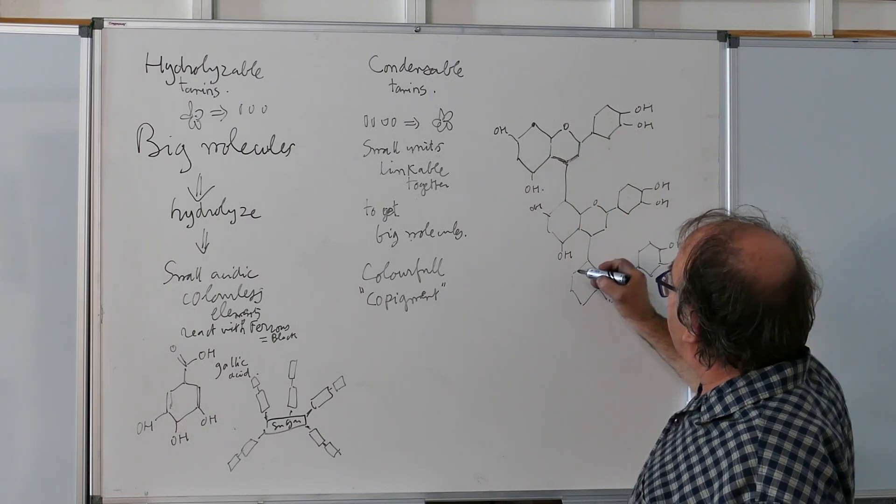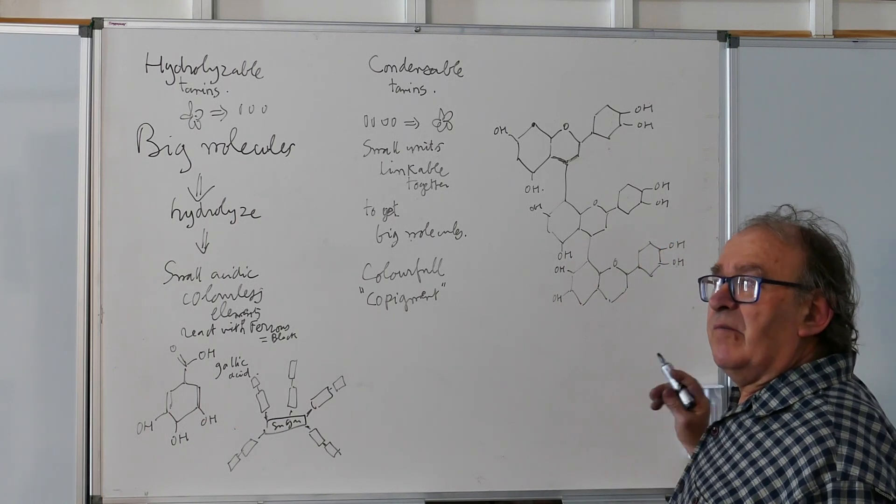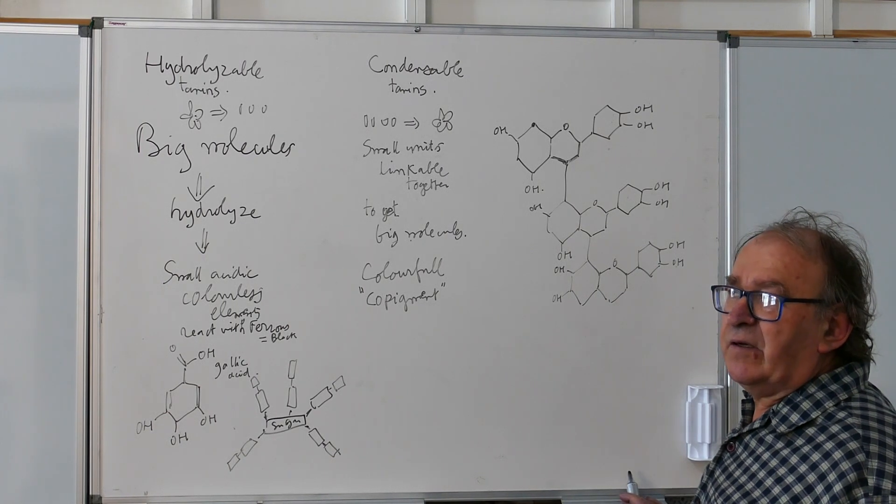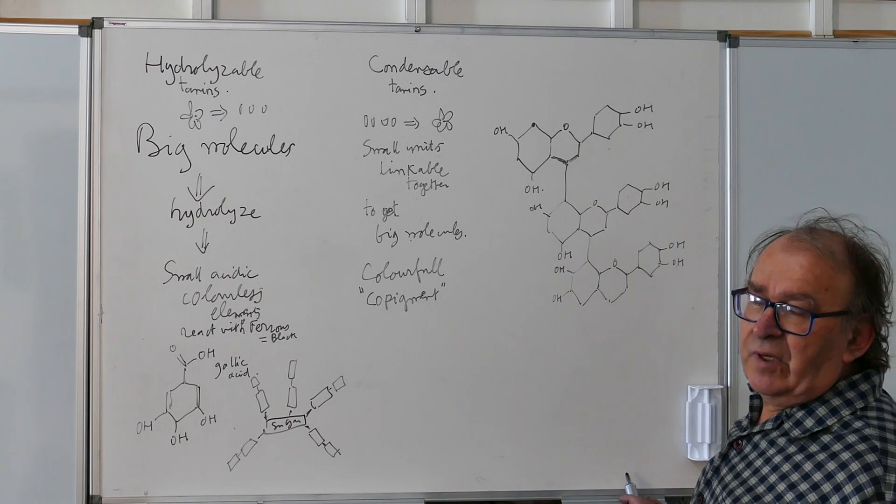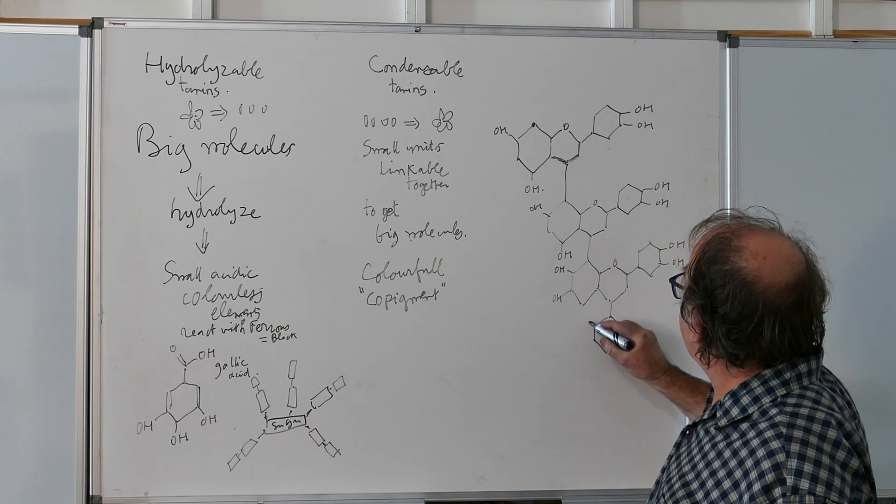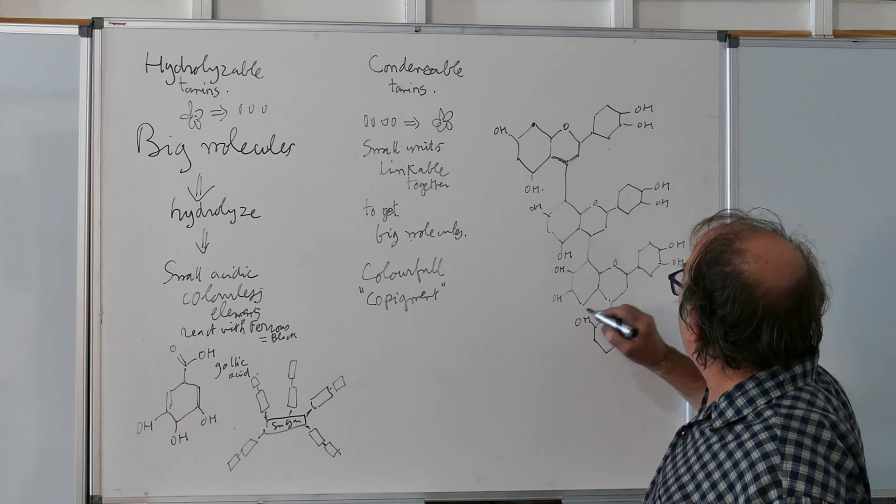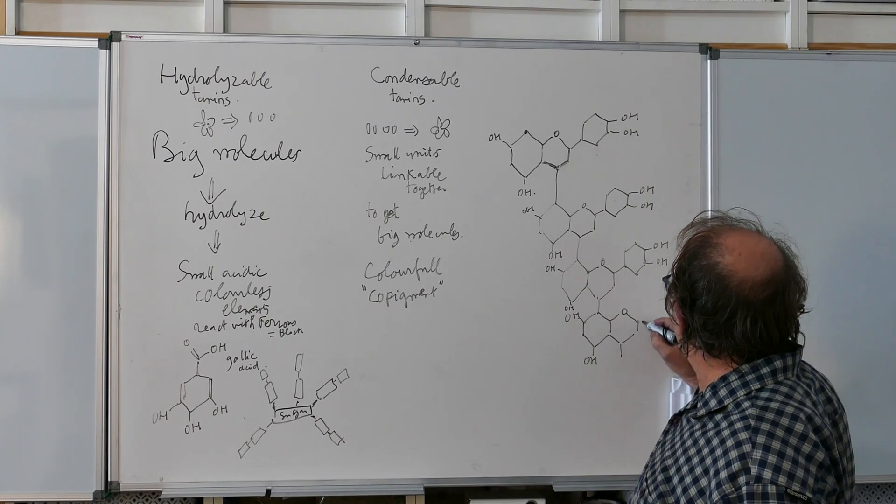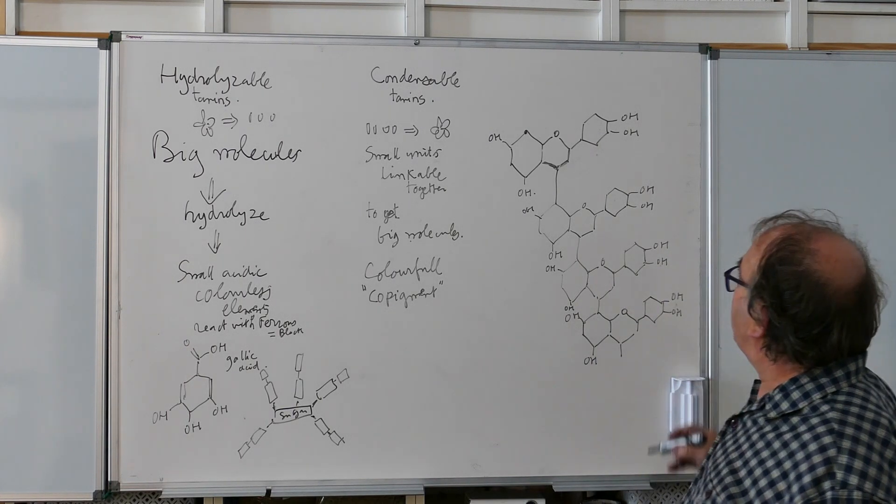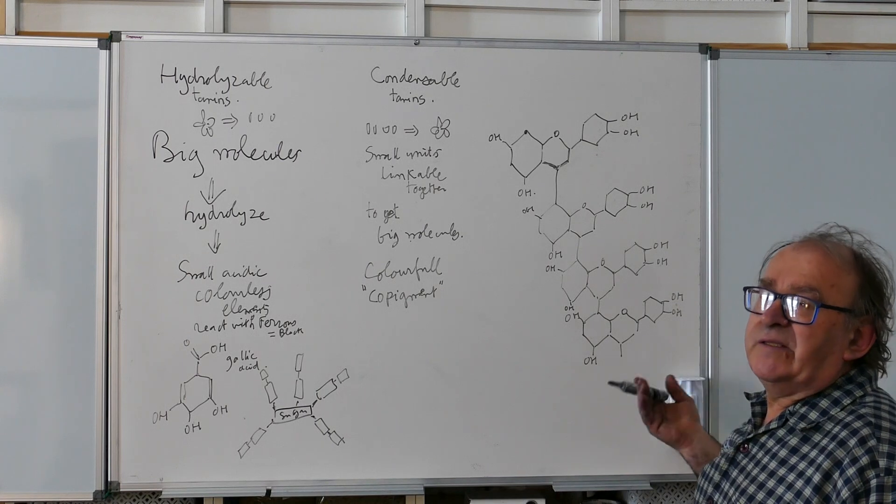So, the small unit by itself is called catechin. Because the main, the most important commercial product, having that in, is from Acacia catechu. So, they call it catechin. And it makes a kind of polymer. So, we'll stop after this one. But, it could be very, very big. And so on. And then, the bigger it is, the most stable it is.